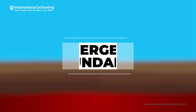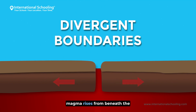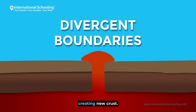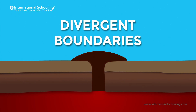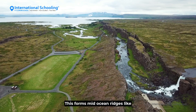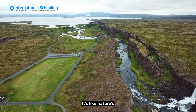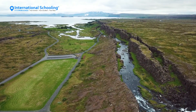Let's talk about divergent boundaries. This is where plates move away from each other. As they pull apart, magma rises from beneath the Earth's crust to fill the gap, creating new crust. This forms mid-ocean ridges like the Mid-Atlantic Ridge. It's like nature's way of recycling.